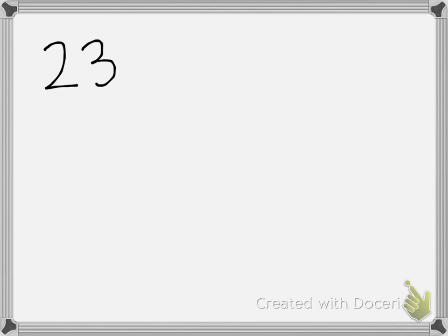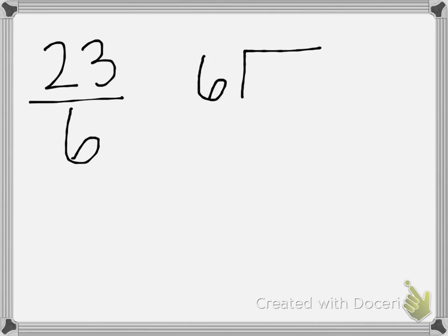Let's try another one. We are going to take a fraction greater than 1: 23 sixths. We are going to divide — how many times can 6 go into 23? This first step is division.